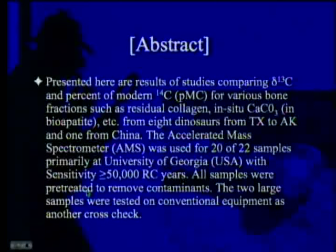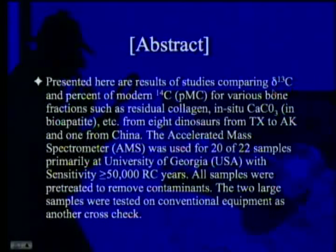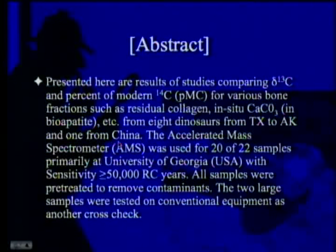Continuing with the abstract itself: presented here are the results of studies comparing Delta-13C — that's the ratio of carbon-12 to carbon-13, which decreases in plants, particularly those using the C3 method because they prefer carbon-12 to carbon-13, and prefer it twice as much over carbon-14 — and the percent modern carbon for various bone fractions, such as residual collagen in-situ, calcium carbonate in bio-apatite, etc., from eight dinosaurs from Texas to Alaska and one from China. The accelerated mass spectrometer was used for 20 of 22 samples, primarily at the University of Georgia, with sensitivity greater than 50,000 radiocarbon years. All samples were pre-treated to remove contaminants.